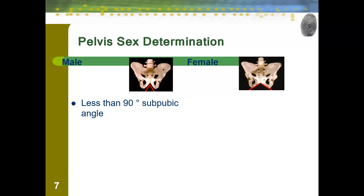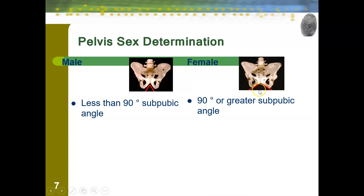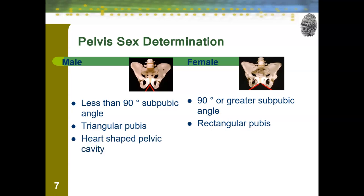Males have a sub-pubic angle of less than 90 degrees — narrow — while females have a 90 degree or greater sub-pubic angle because the baby has to come through there. Men tend to have more of a triangular pubis, while women have more of a rectangular pubis, much better for a baby to rest in. Men have a heart-shaped pelvic cavity, while females tend to have a much more oval-shaped pelvic cavity — better for a baby to pass through during childbirth.